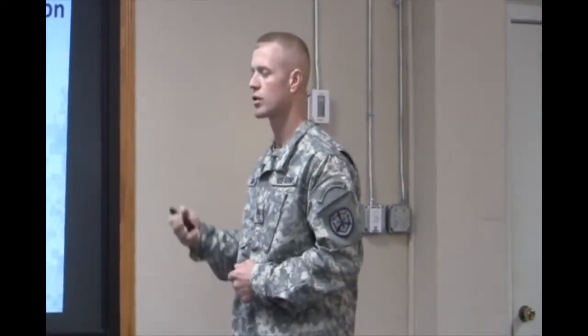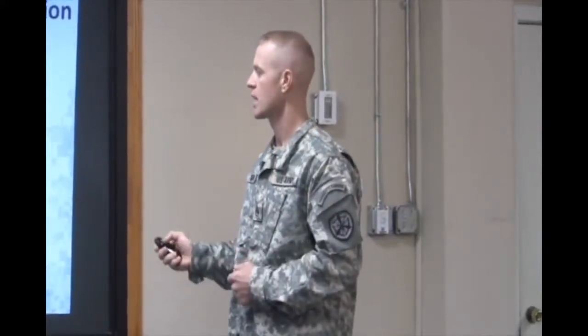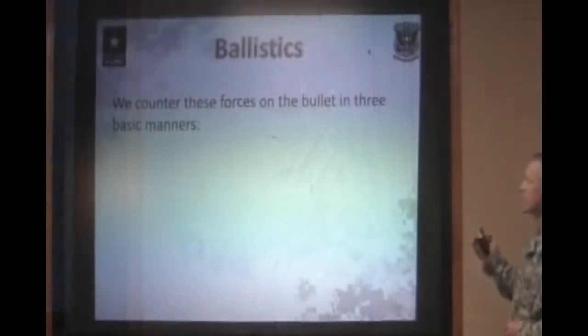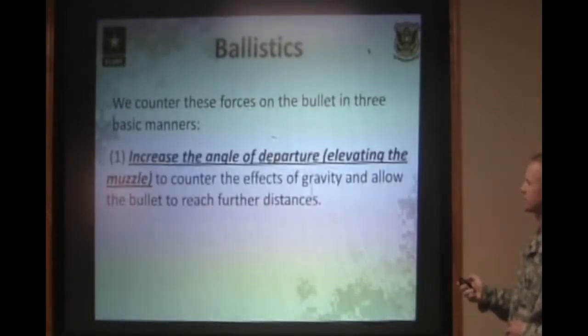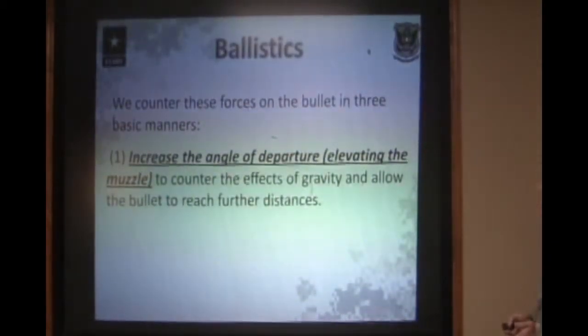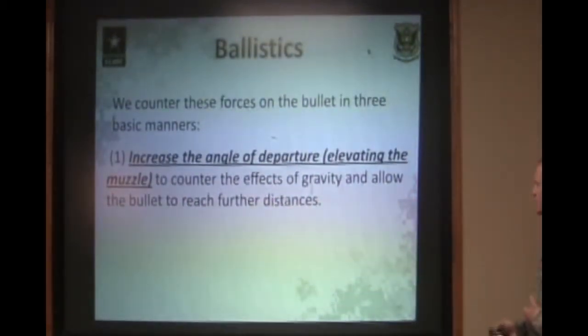These two forces are gravity, which causes the bullet to start to fall towards the earth immediately upon leaving the muzzle, and then air resistance, which causes the bullet to slow down and fly erratically once it becomes unstable. We counter these two forces in three basic manners. We increase the angle of departure of the bullet, which counters the effect of gravity, allowing our bullet to fly farther before it hits the ground.